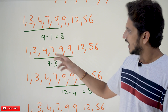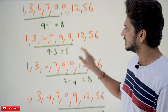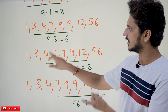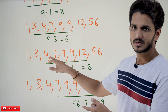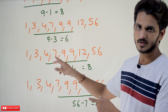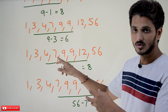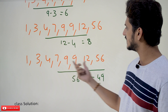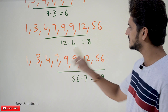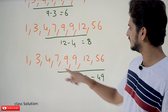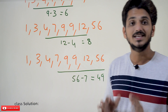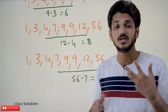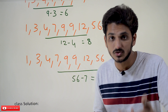After sorting, we pick consecutive combinations of 5 elements. The next combination is 4, 7, 9, 9, 12. Maximum is 12, minimum is 4. 12 minus 4 equals 8. The next combination is 7, 9, 9, 12, 56. 56 minus 7 equals 49. These combinations are enough — there is no need to check the remaining combinations.